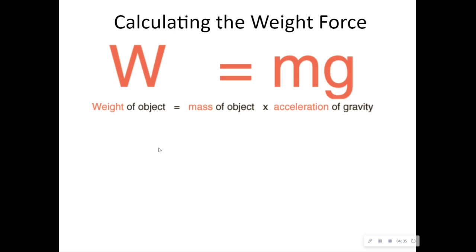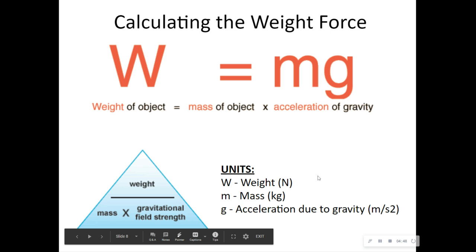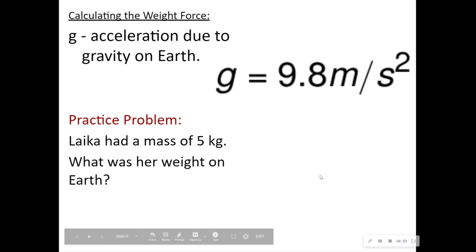So remember, weight of an object is mass times acceleration, just like force is. So force and weight are almost exactly the same. The only difference is acceleration of gravity is going to be the same over and over and over again on Earth. On Earth, it is 9.8 meters per second squared. So no matter what, when we're doing weight on Earth, it is your mass times 9.8 meters per second squared.